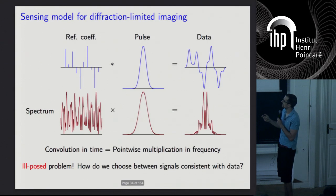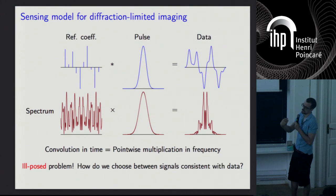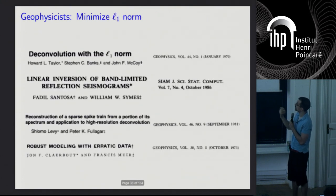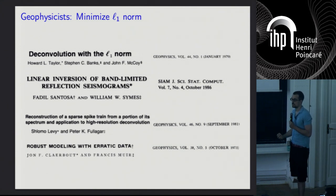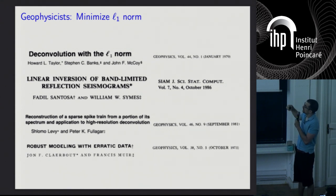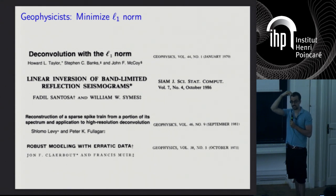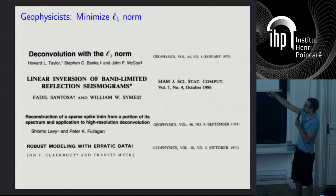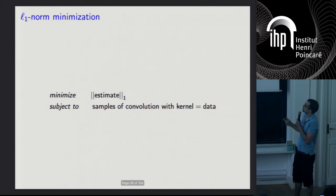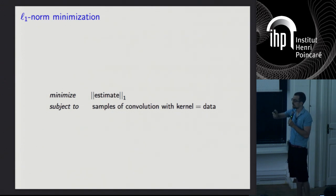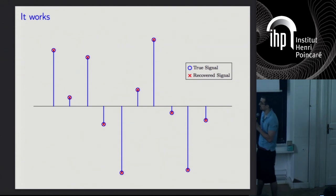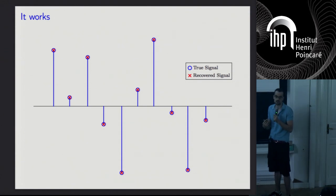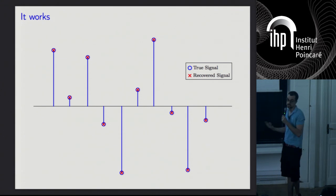How can we actually find a tractable algorithm that imposes sparsity? As you've probably heard, a good idea is to minimize the L1 norm. The first people to propose this for these kinds of problems were geophysicists working on reflection seismology in the 70s and 80s. They suggested minimizing the L1 norm of the estimate subject to data constraints, and they saw that it works. However, at that point they didn't have a theoretical understanding of when this is guaranteed to work or why. That's the point of this talk.